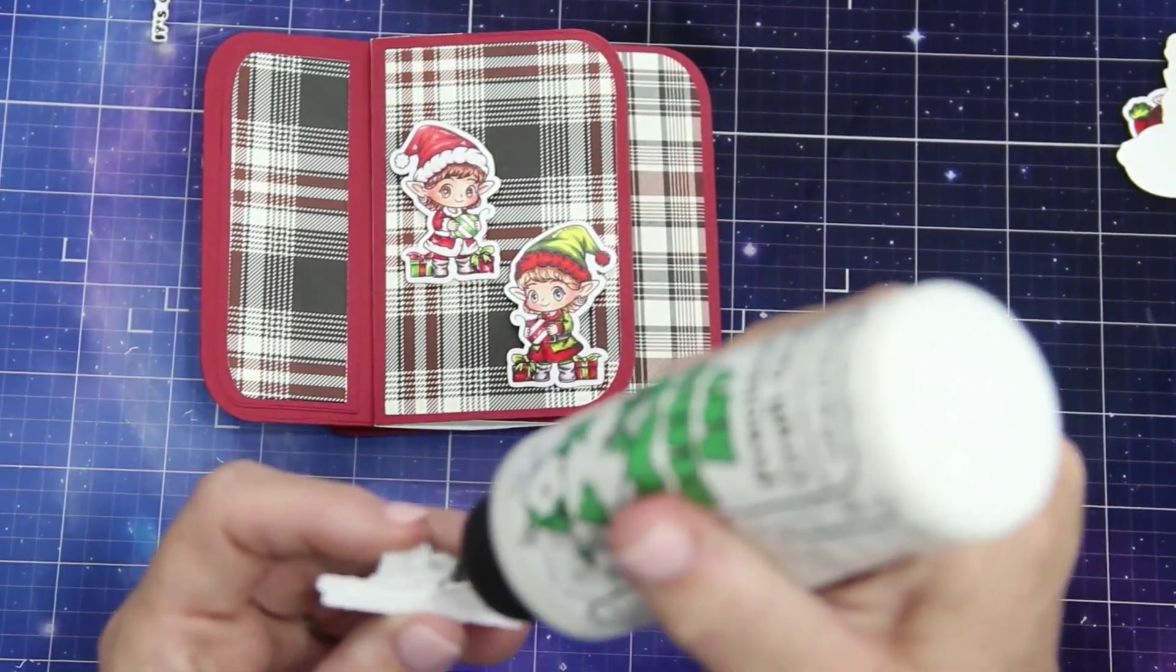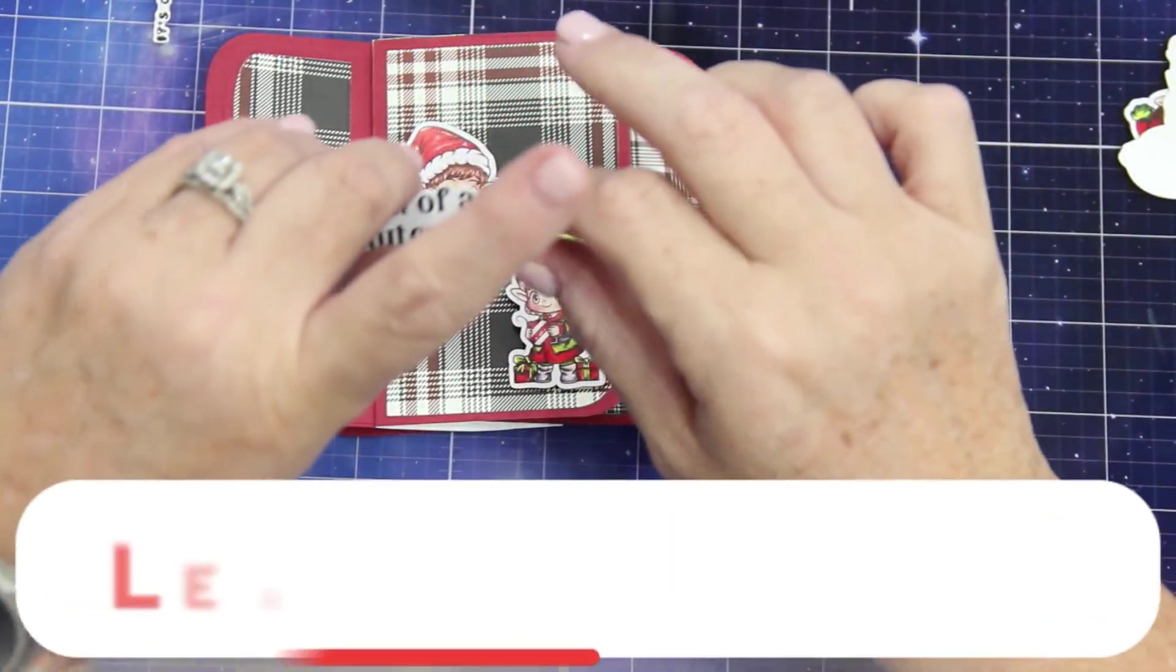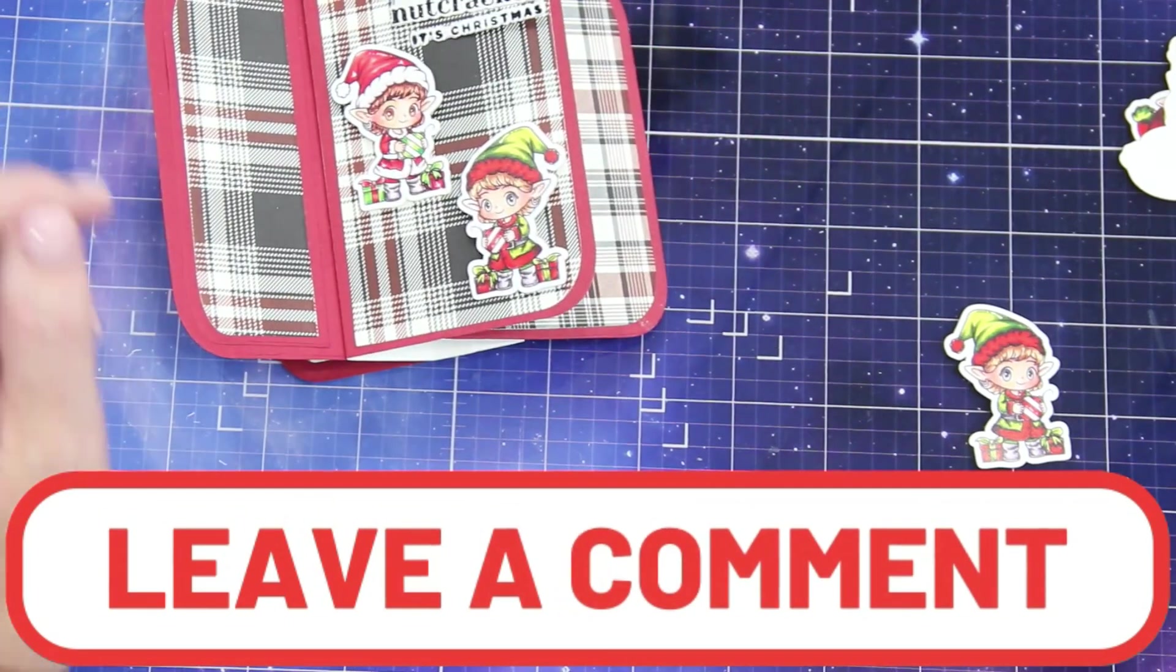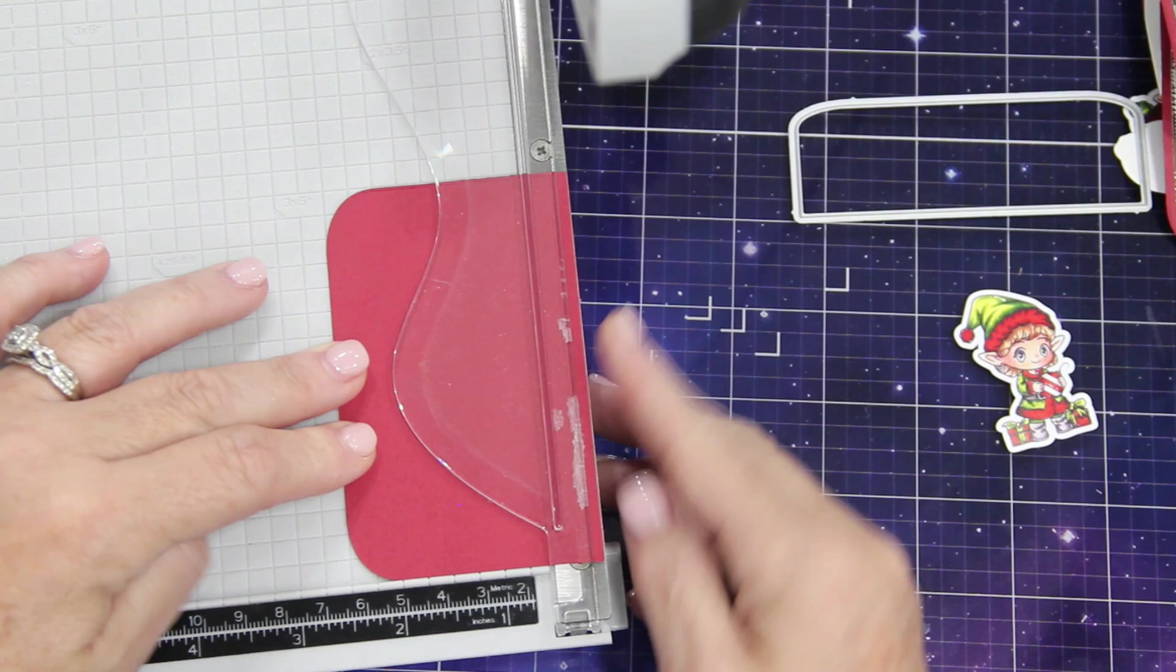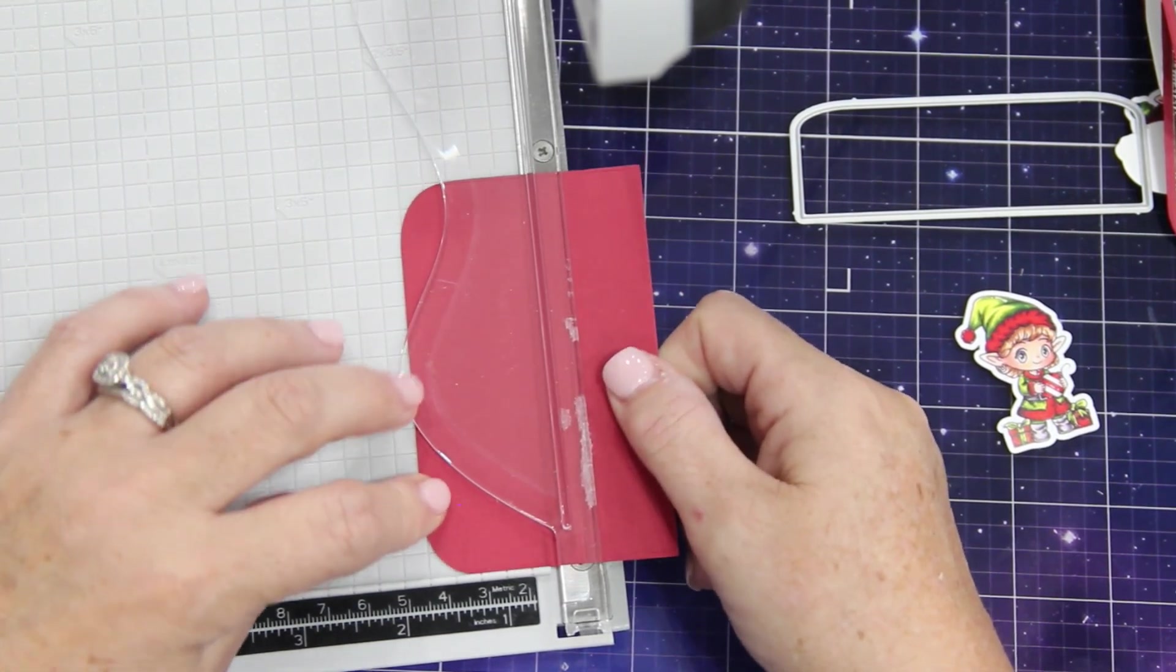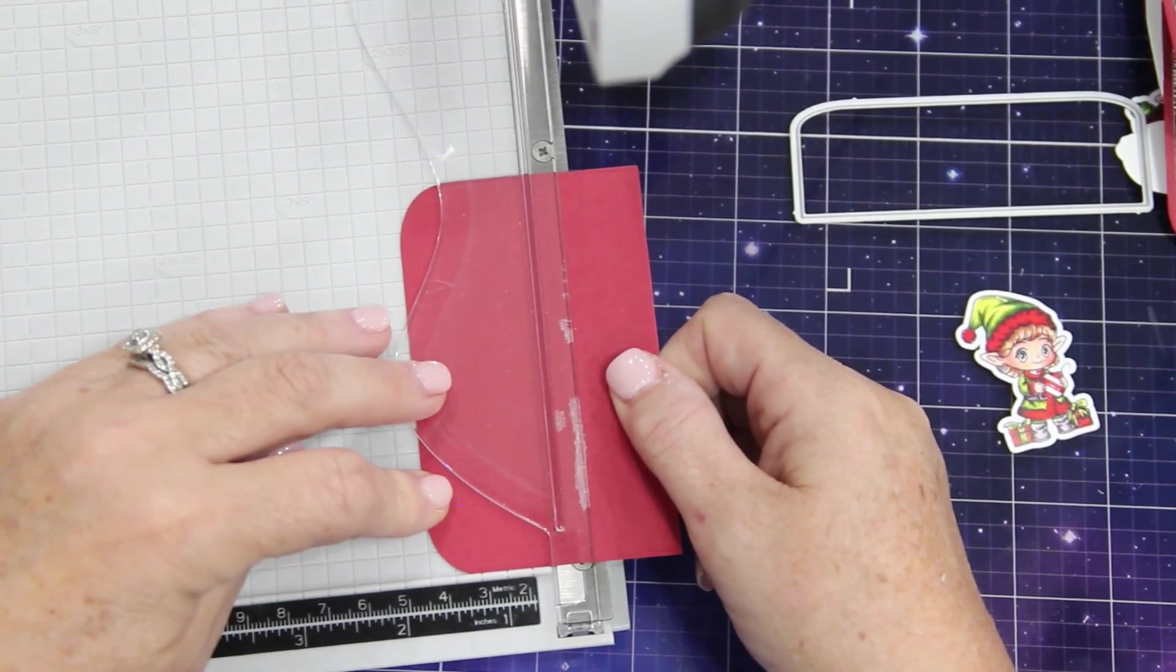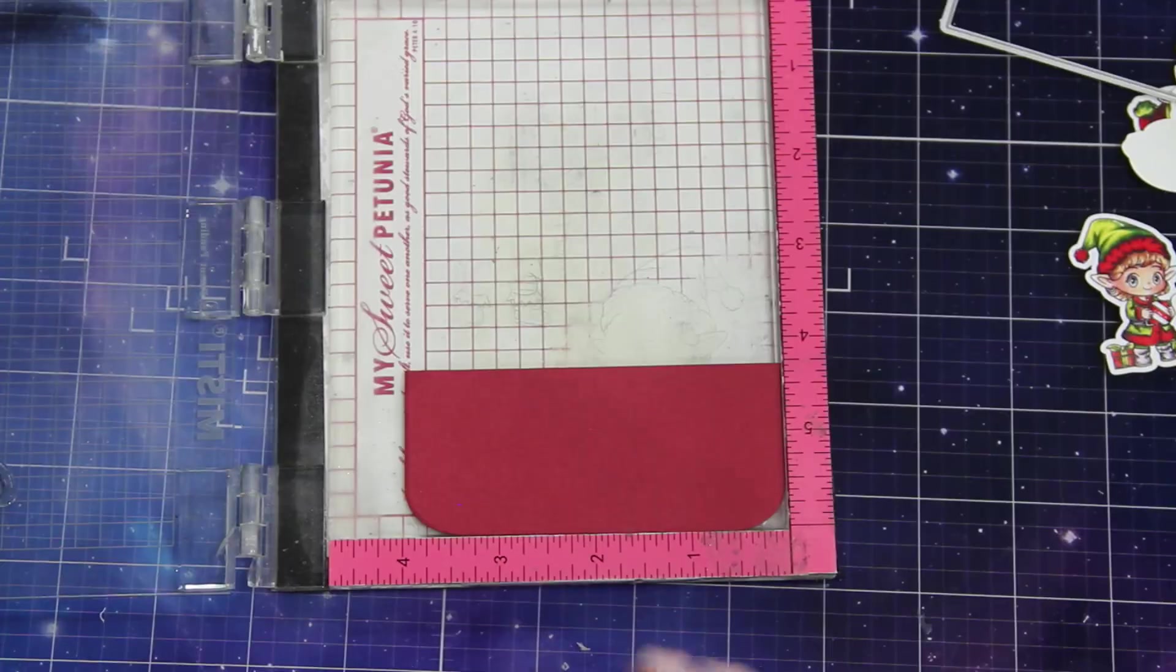And all nine combinations of sentiments and images have a coordinating die. So, if you don't know, Pajama Crafter now sells the stamp by itself, or you can buy a stamp and die combo. If there's a coordinating die, you cannot buy a die separately. So, at the time of purchase, you will either have to choose a bundle or just the stamp.